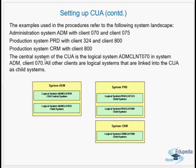The central system of the CUA is this ADM system, used as the CUA. The logical system is ADM client 070. All other clients in the logical system are linked to the CUA as child systems. So ADM has two clients — two clients here and one client in CRM.